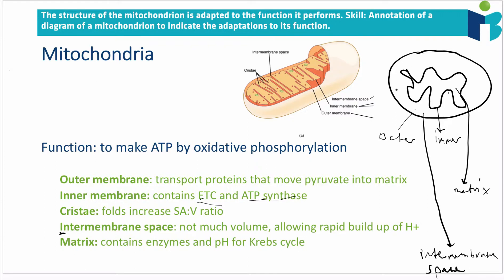A specific adaptation of the intermembrane space is that it has very little volume. This is important because part of the function of the intermembrane space is to generate a proton gradient quickly in the electron transport chain, enabling chemiosmosis through ATP synthase. If the volume were really large it would take many more protons to generate a high concentration, but since it's a small volume, the gradient builds up quickly.